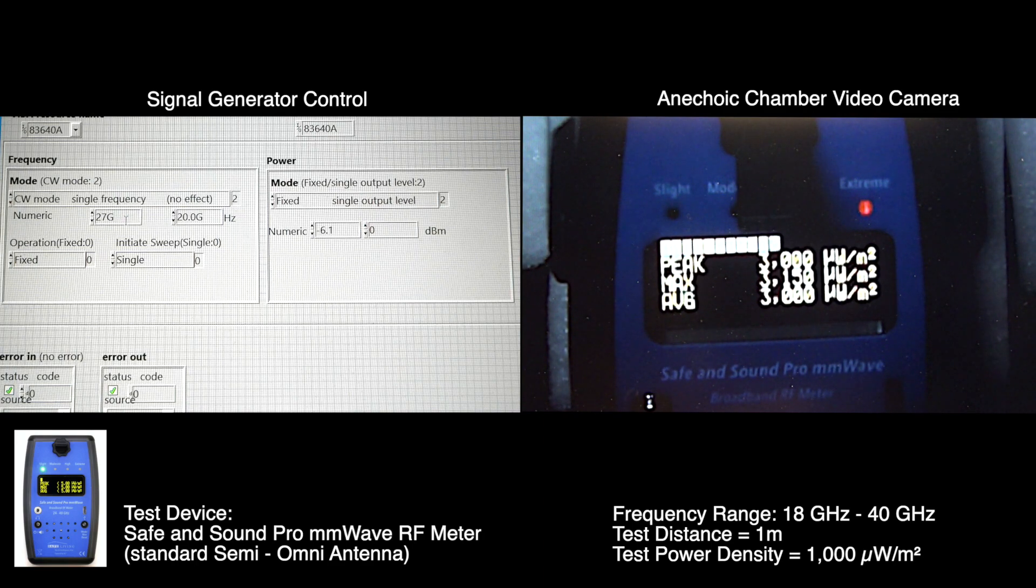27 gigahertz. Minus 6.5 dBm. 3270 microwatts per square meter.